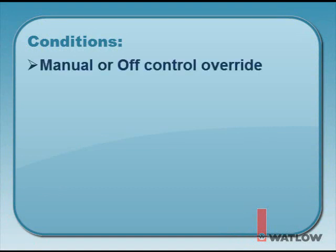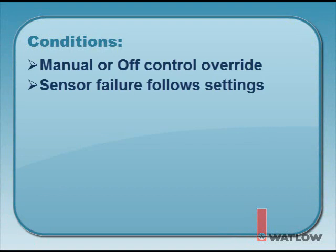There are conditions that alter the control mode. Some of these conditions are: a manual or off control mode override is requested via digital input, easy key, or action function — these are programmable by the user. A sensor has failed, and the control mode changes to the user pre-programmed action.